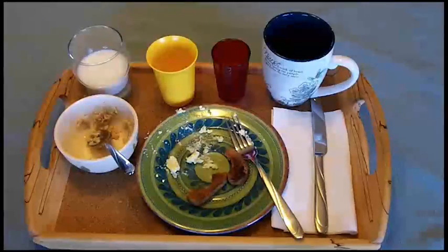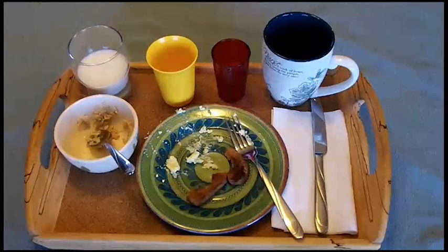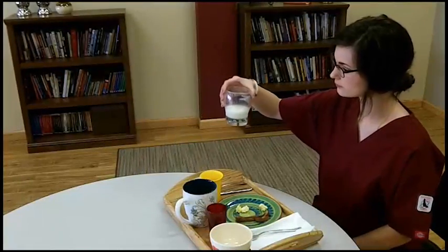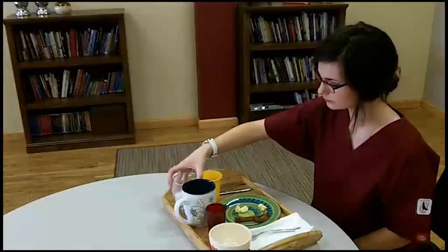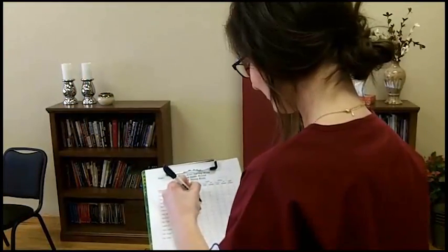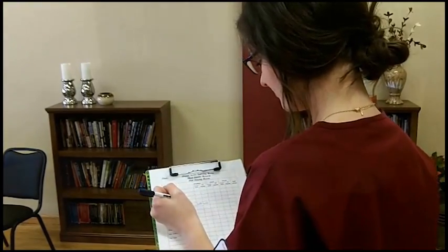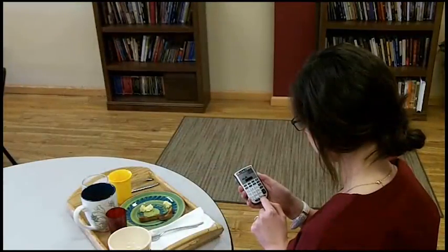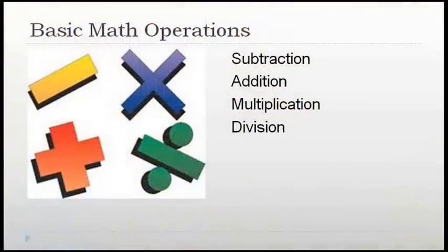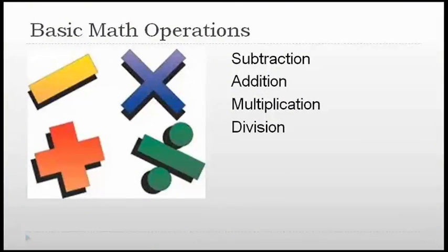Sometimes you may measure and total 24-hour intake and output on a resident, if this has been ordered. At other times, you will just keep track of the fluid intake. When residents are finished with their meals, you will calculate and total the amount of fluid intake in milliliters that the resident consumed and record it. Many facilities have a calculator in the dining room for you to use because, again, accuracy is so important. Basic addition, multiplication, and division are all used in figuring intake.